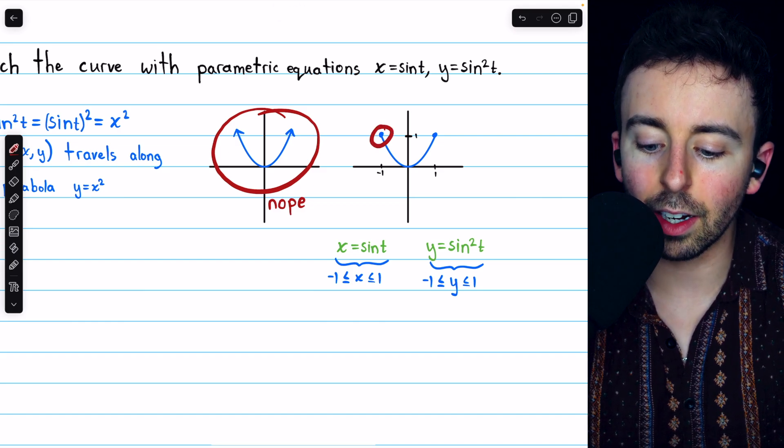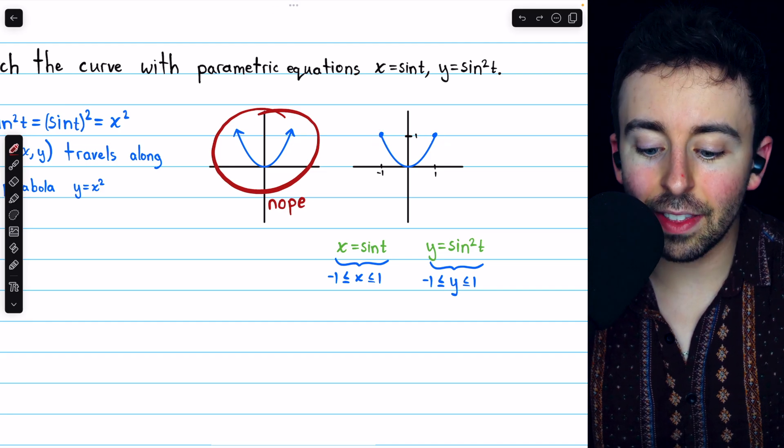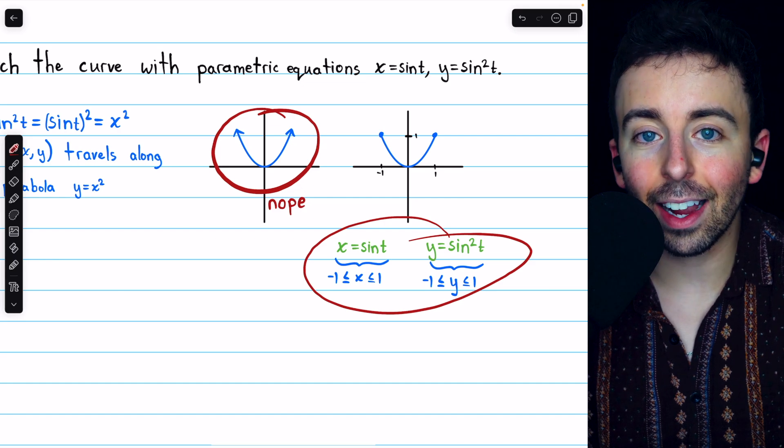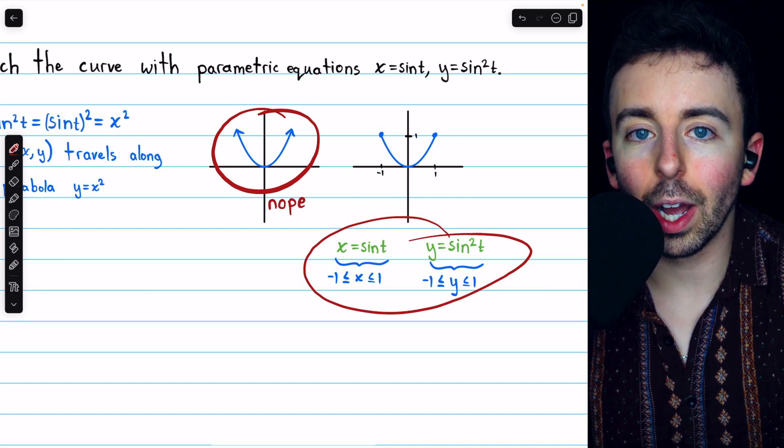It goes out to negative 1, 1, and positive 1, 1. And again, that's because the parametric equations force restrictions on x and y that wouldn't otherwise be there.